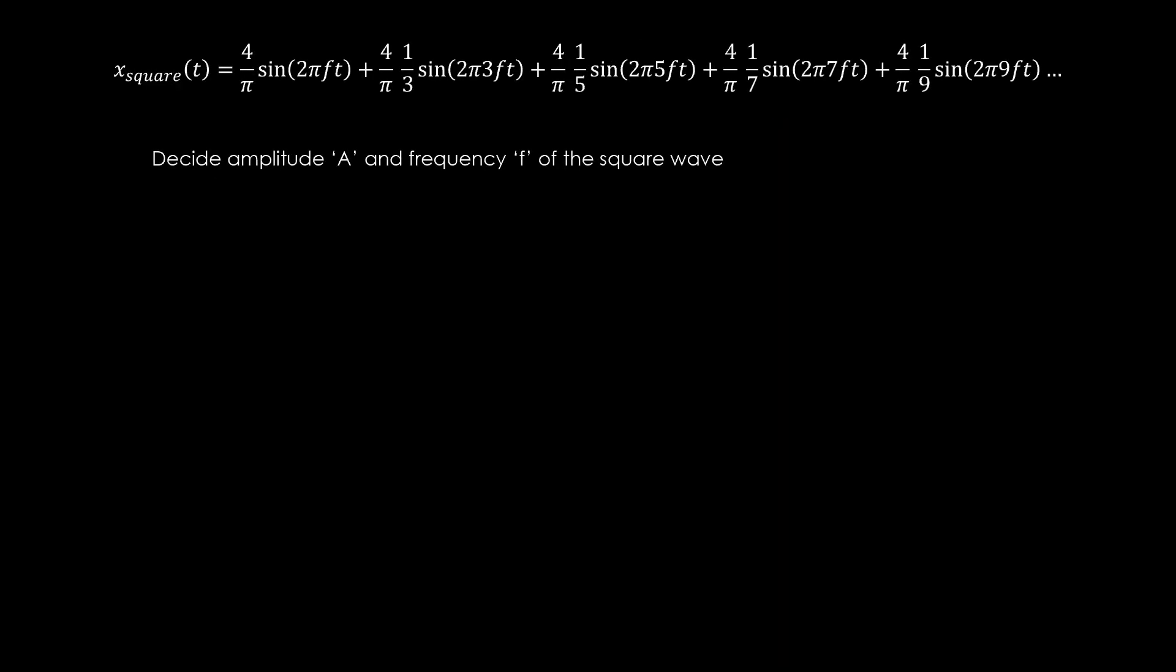The first step is to decide what amplitude and frequency we want for the square wave, say a and f. So we start with the first component, which is going to have an amplitude a times 4 over pi, and frequency f.